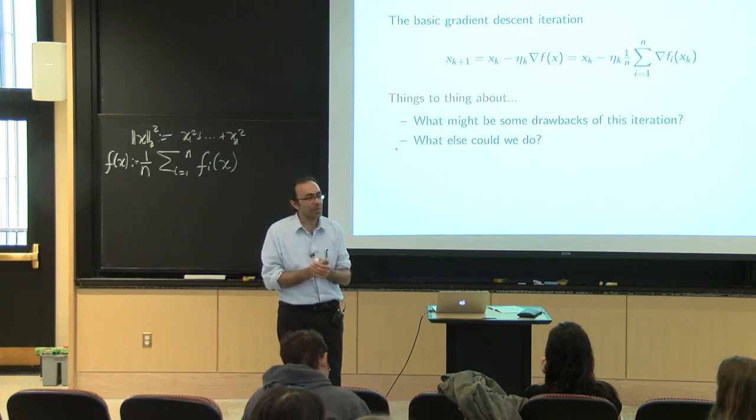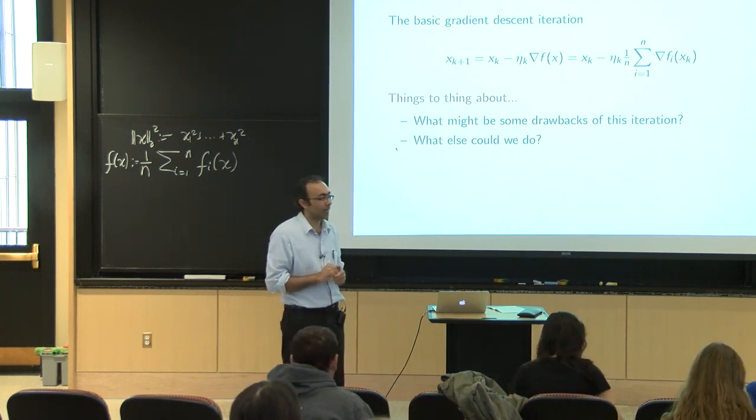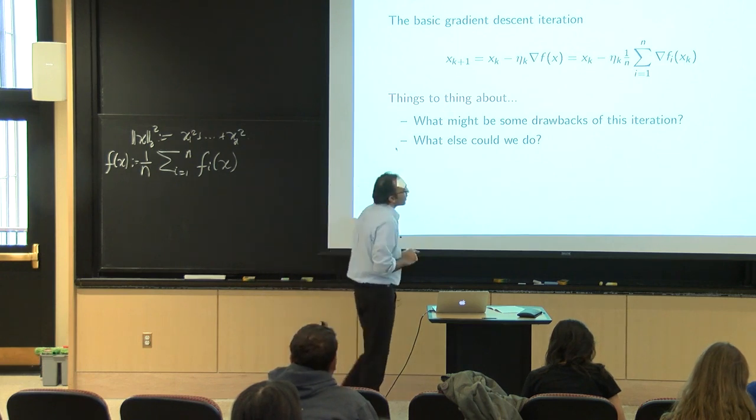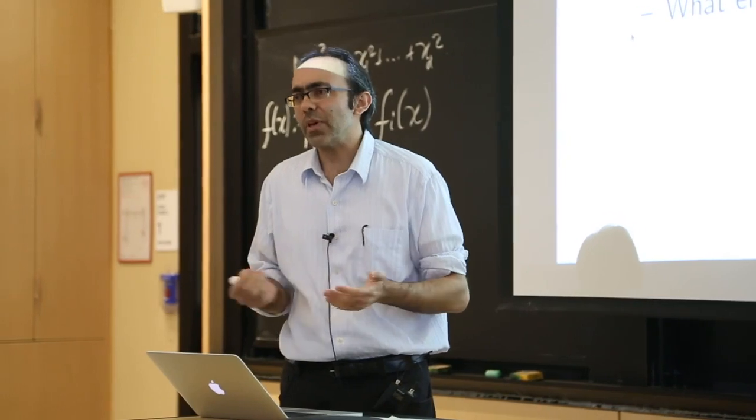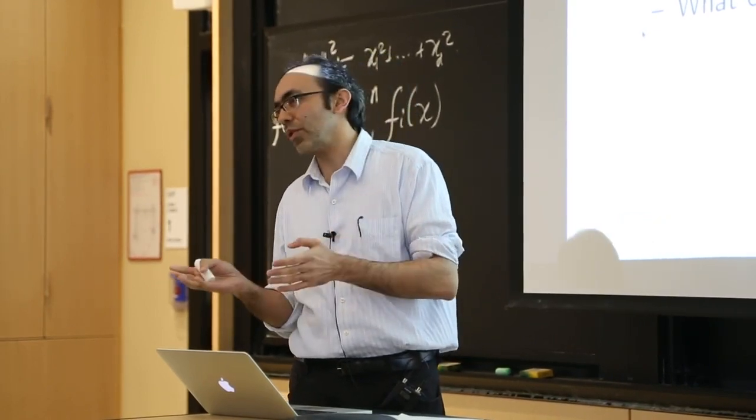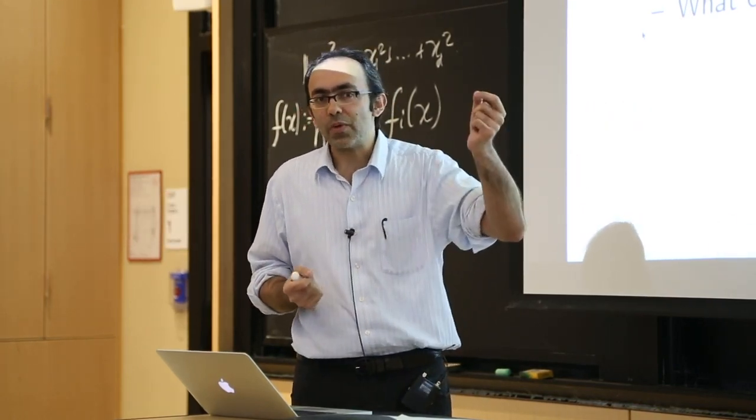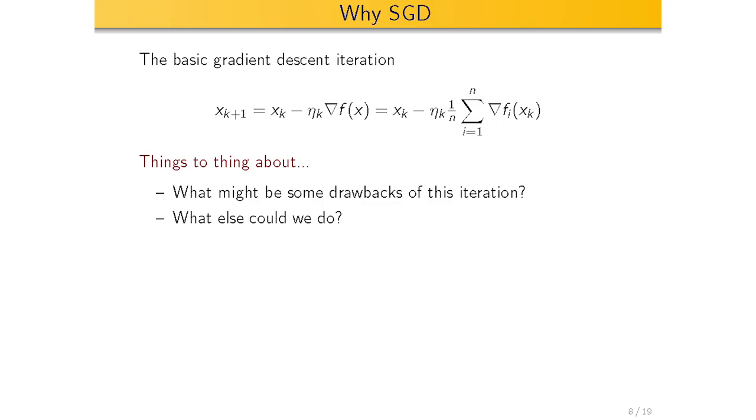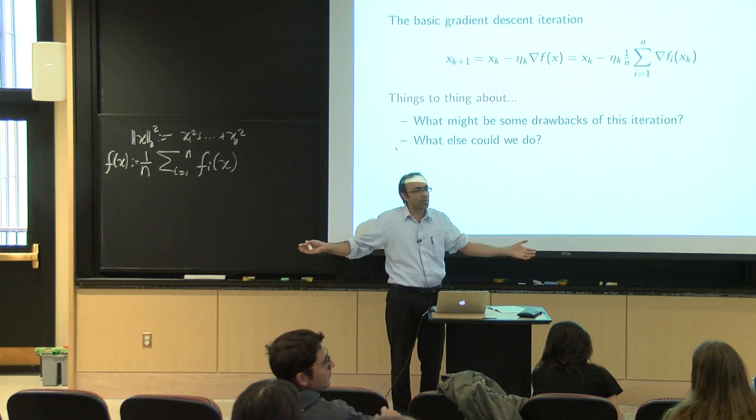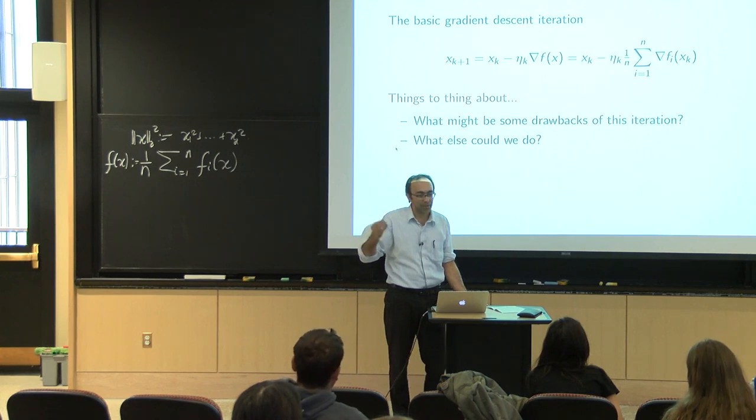It's a pretty big sum, especially if N is a billion or some bigger number. That is the prime drawback for large scale. The big drawback is computing gradient at a single point involves computing the gradient of that entire sum. Getting a single gradient to do a single step could take you hours or days.